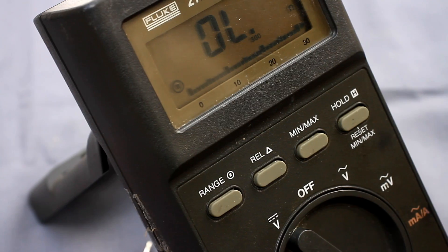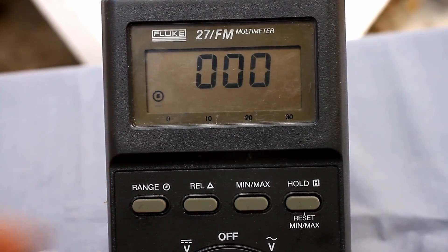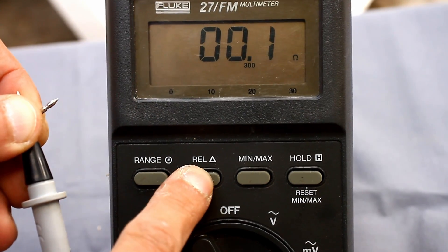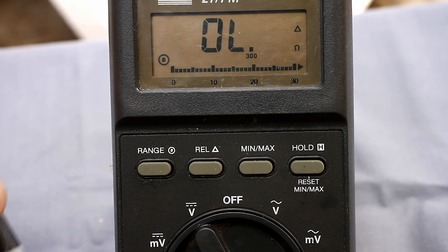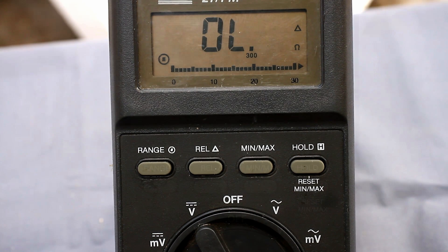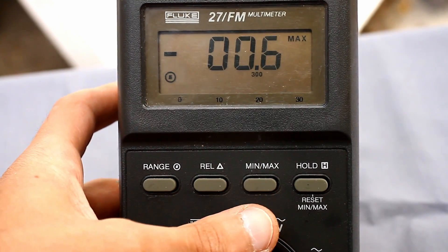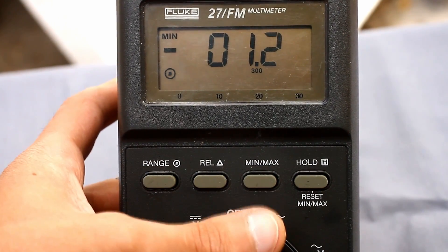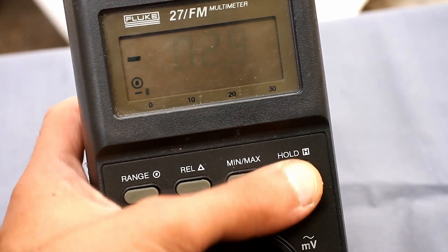Control buttons are located under the display. The first button is responsible for manual range selection and switching sub-ranges. Nearby is a button for relative measurements. It resets the readings on the display, for example eliminates the resistance of the probes. The third button is Min-Max mode for measuring the minimum and maximum values. And the last button will hold the readings on the display.